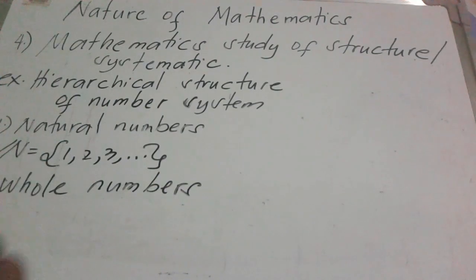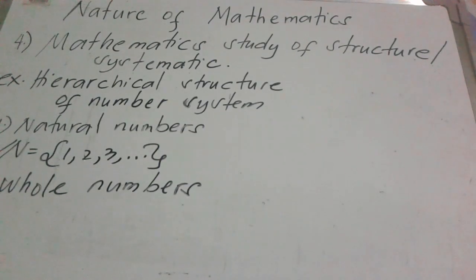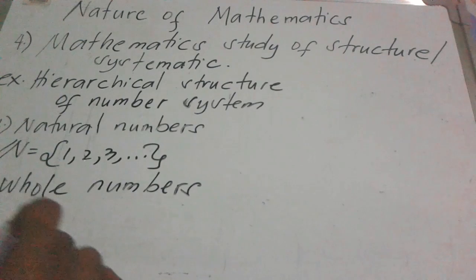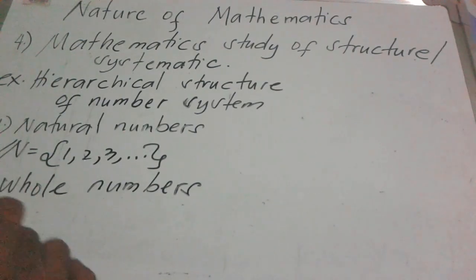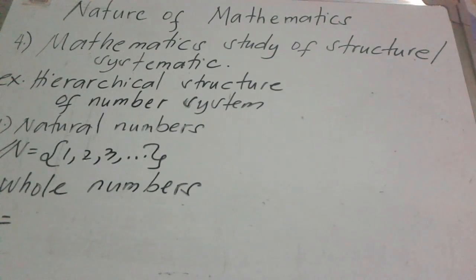Next, the second one is the whole numbers. All the natural numbers are whole numbers, but not all the whole numbers are natural numbers. The whole numbers, assuming the symbol W, are all numbers including zero.